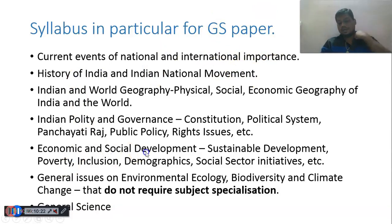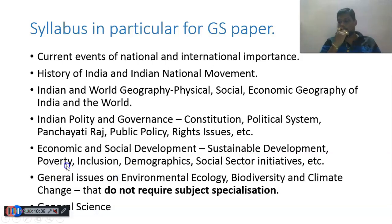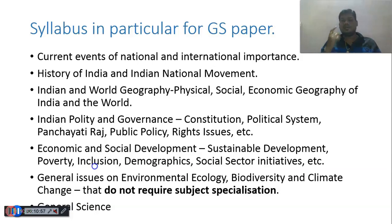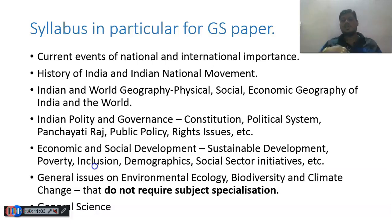Next, Economy and Social Development. Under the economy section, you need to study: Sustainable Development — what is sustainable development; then SDGs, that is Sustainable Development Goals; Poverty — why is there poverty in India, what are the different types of poverty alleviation programs — for example, MGNREGS (Mahatma Gandhi National Rural Employment Guarantee Scheme), which is a poverty alleviation program. Then Inclusion — for example, the term Inclusive Growth, meaning 'Sabka Saath, Sabka Vikas.' You need to read what are the government's initiatives for inclusive growth. Then Demographics — aspects related to population; associated terms such as Demographic Dividend — what is demographic dividend and how can we realize it.